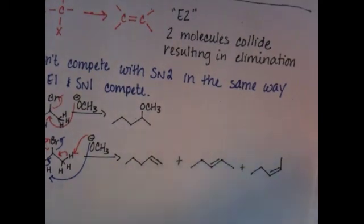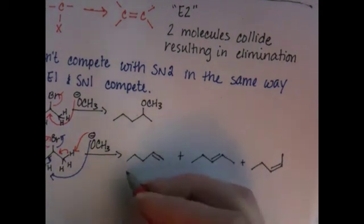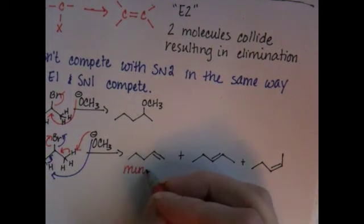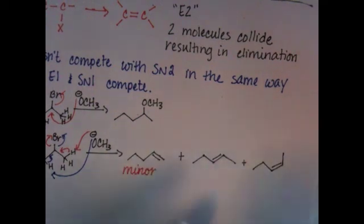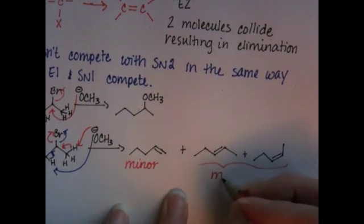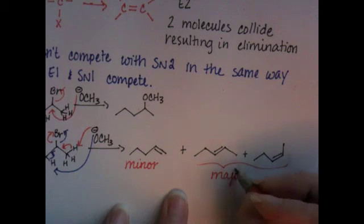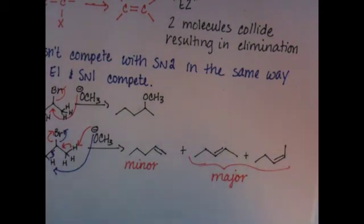Of these three products, this one is definitely going to be minor, and for now, we'll say that these two are the majors. In Chapter 7, you'll learn how to identify which of these two isomers is the major product.